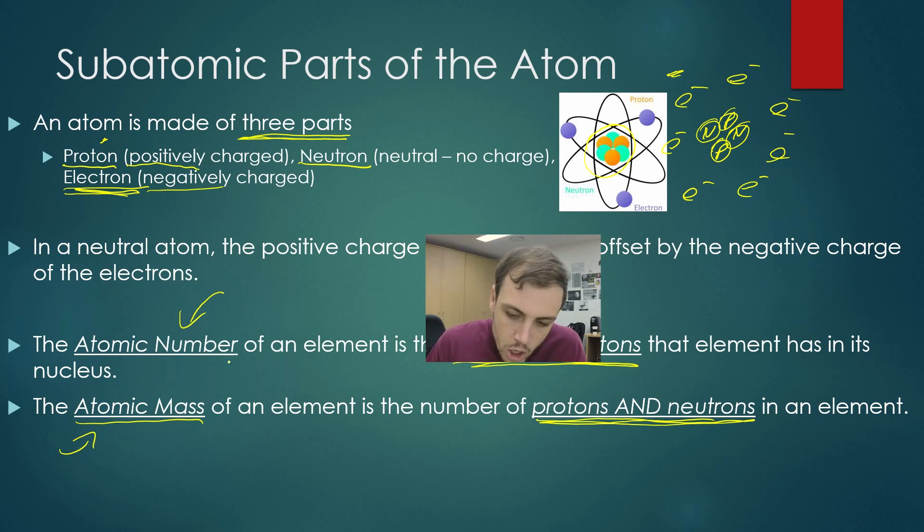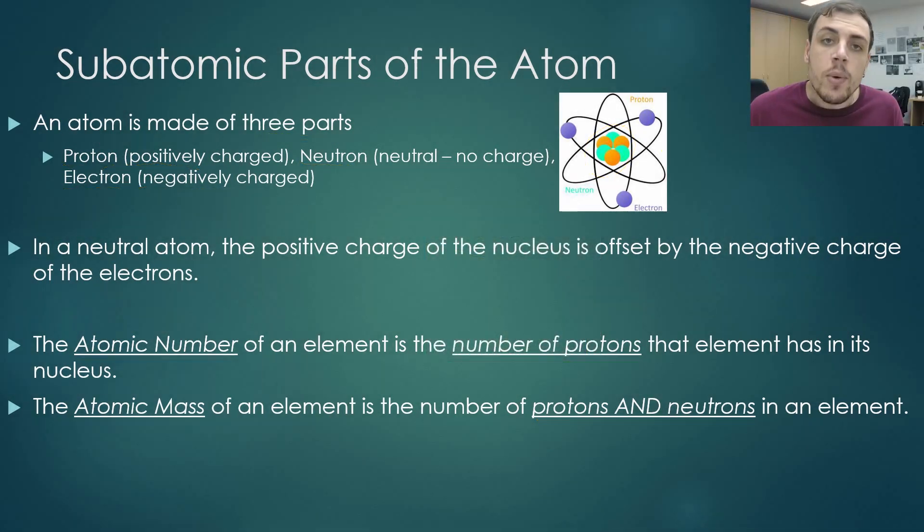So the atomic number tells us how many protons we have. The atomic mass, on the other hand, tells us the number of protons and neutrons. Now when looking at the atomic number or the atomic mass of a particular element, this can become very useful when accompanied by the periodic table.